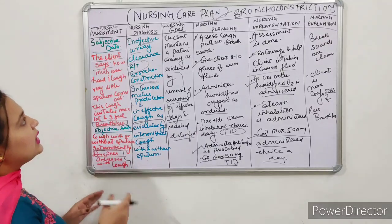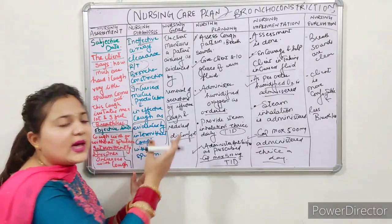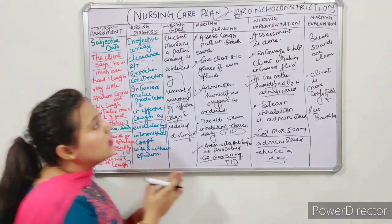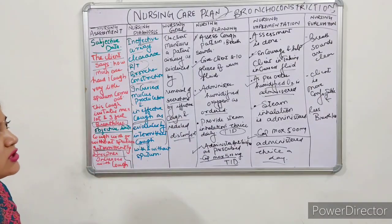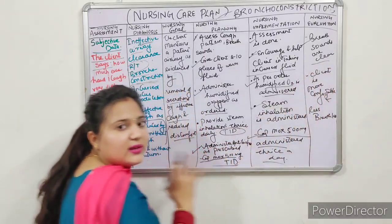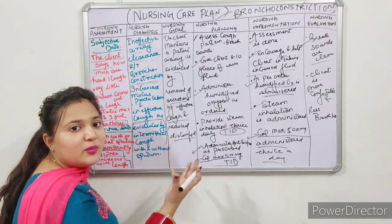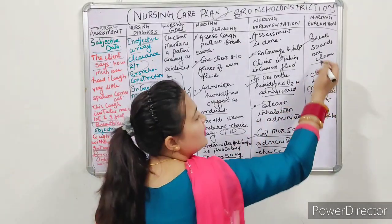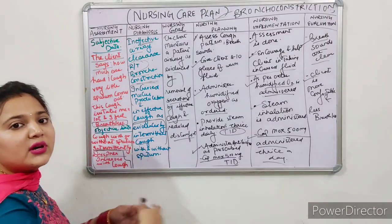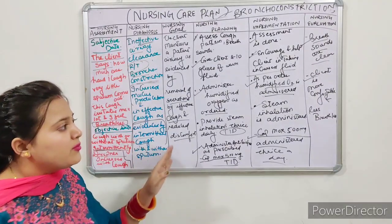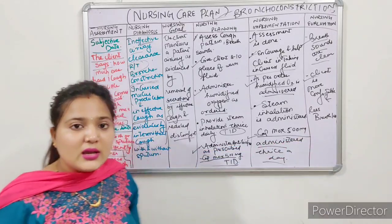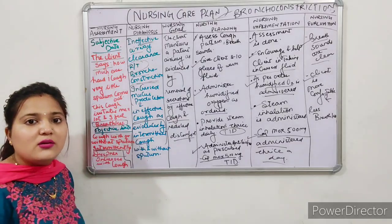Now Evaluation: we made the diagnosis, wrote the goal, did planning, and implemented the plans. What conclusion came out? What outcome? Breath sounds are clear — when we auscultated with a stethoscope, breath sounds were clear. The patient was feeling breathless before. After interventions, a positive result was obtained. Evaluation: breathing sounds are clear. Client is more comfortable — before, the client had discomfort and felt fatigue. Client is now more comfortable and less breathless.